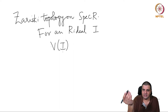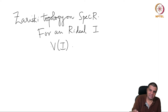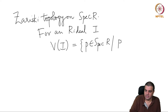This is an arbitrary ring. The points do not look like points of K^N or anything. This is not an algebraically closed field — no such restrictions on the ring, just a commutative ring. But we will still use the same notation to mean something which is slightly different.